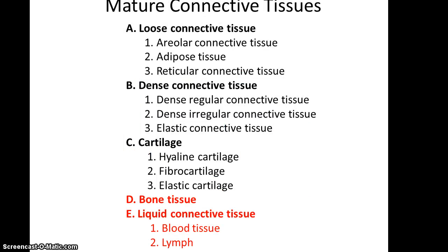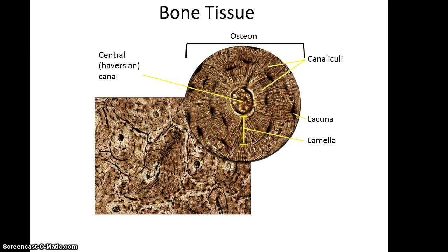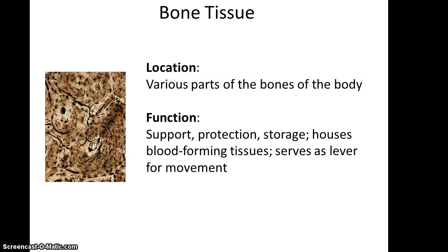Bone tissue has a concentric ring structure — some people liken it to a cut-down tree — with a central canal where blood vessels and nerves are located, surrounded by rings of lamina, which is the highly mineralized extracellular matrix. Lacunae are also present, appearing black in this image, each containing an osteocyte or bone cell. The central canal is connected to the lacunae through canaliculi, which are canals allowing diffusion of nutrients and wastes to and from the osteocytes. Bone tissue is found throughout the body and functions in support, protection, storage, housing blood-forming tissues, and serving as levers for movement.